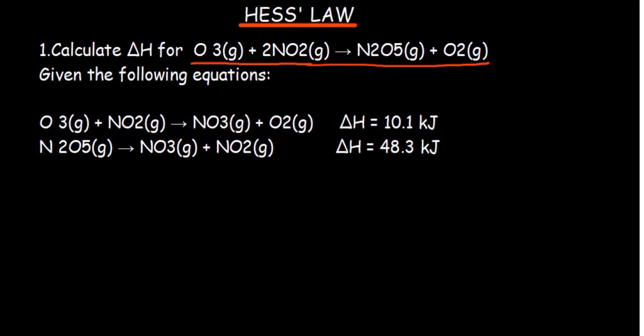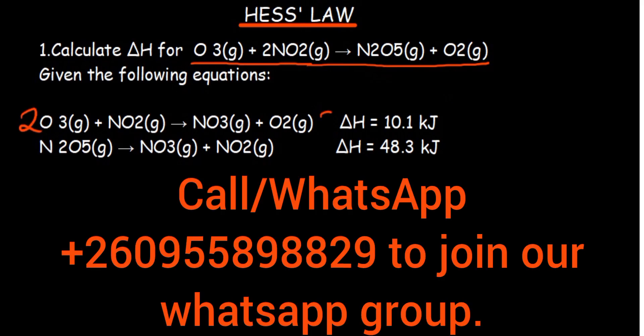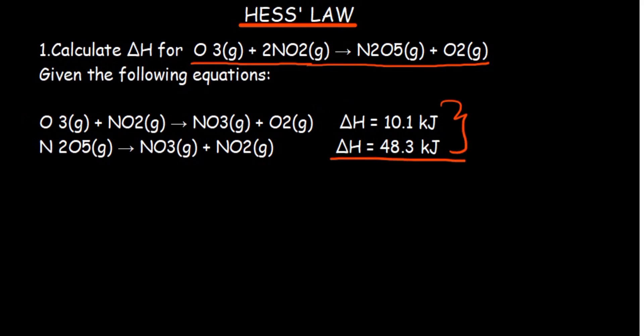If I multiply the entire equation by 2, I'm supposed to multiply 2 against the enthalpy of the reaction as well. And then at the end of it, whatever we do there is going to affect these. Then we'll just add them in the way that they are, and they will give us the enthalpy of the reaction given on top.